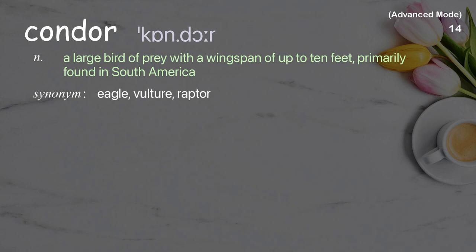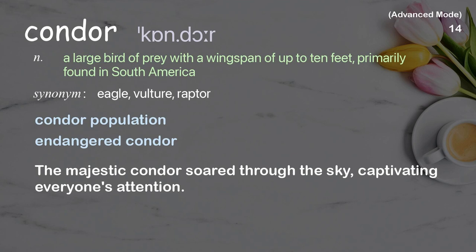Condor: A large bird of prey with a wingspan of up to 10 feet, primarily found in South America. Examples: condor population, endangered condor. The majestic condor soared through the sky, captivating everyone's attention.